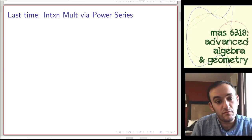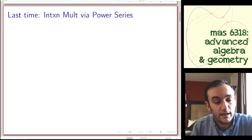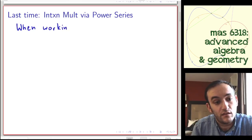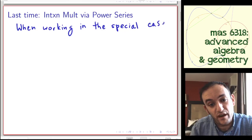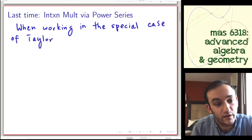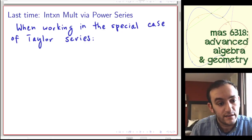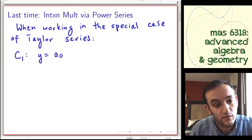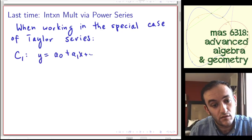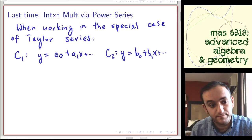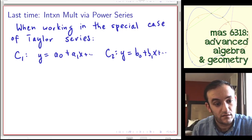In the last lecture we talked about intersection multiplicity via power series, and in the special case of Taylor series — that's where you can expand each of your curves into a function y equals a Taylor series of x. And c2 is given by y equals b0 plus b1x, etc. Then you have the intersection multiplicity at zero.